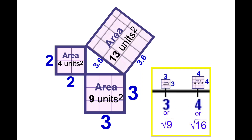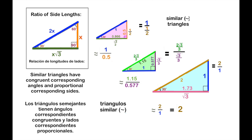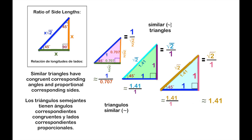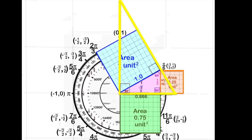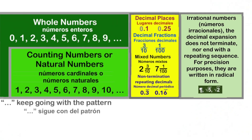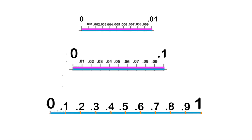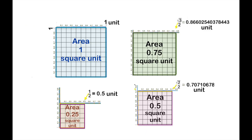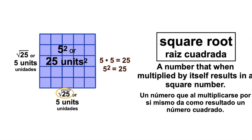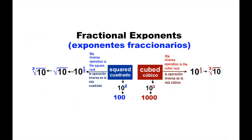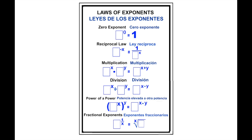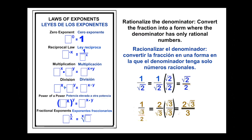The square root of those square units will produce the side measures. Similar triangles have ratios that are proportional. Trigonometry uses numerals less than one, and many of these numerals are irrational — for precision purposes, they are kept in radical form. Know the laws of exponents and how to rationalize the denominator, as fractional exponents are radical numerals.